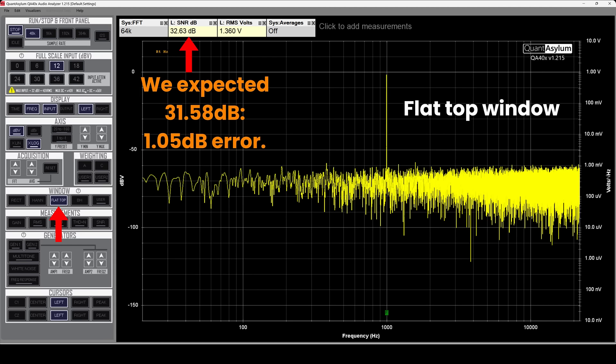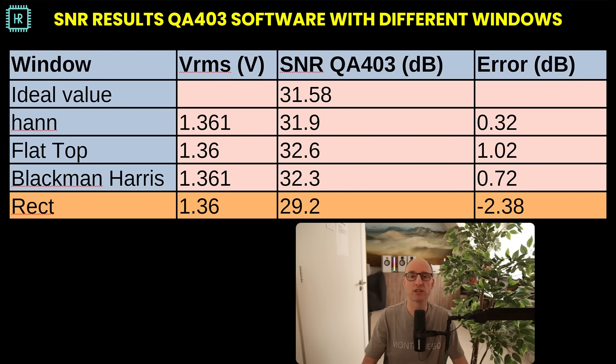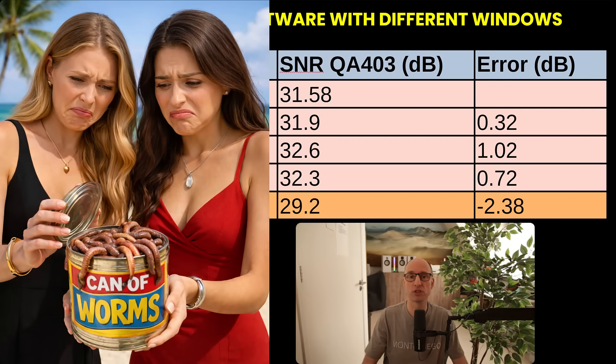Let's try different window functions for the analysis. Previously a Hann window was used. Switching to a flat top window suddenly shows an error of 1.05 dB — window functions should not impact the SNR results. In this overview you see SNR results with different windows. The rect or rectangular window is shown in orange because it's not a good one to use. Since the measurement application limits our options, the time signal the QA403 captures can be exported so you can do the SNR analysis yourself in Python.